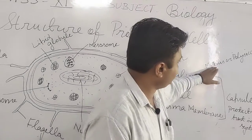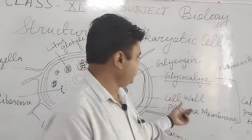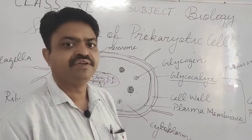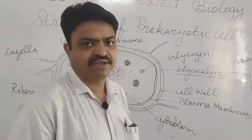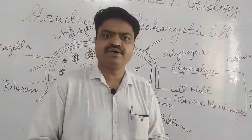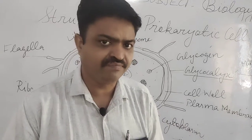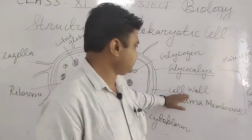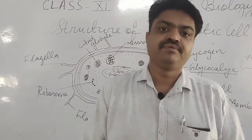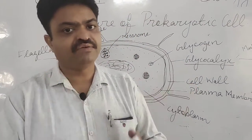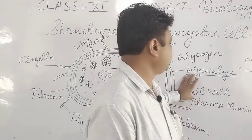Glycocalyx is made up of mucous or polysaccharide. The next layer found is the cell wall, which is made up of cellulose. After the cell wall, there is another covering known as the plasma membrane. So these are the three layers: glycocalyx, cell wall, and plasma membrane. Together, these three layers make the outer covering known as the capsule, which protects the bacterial cell from the host immune system.